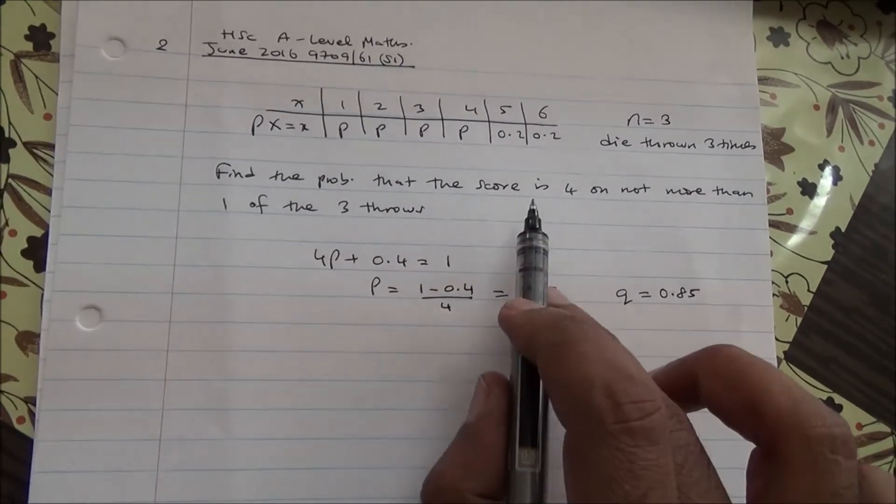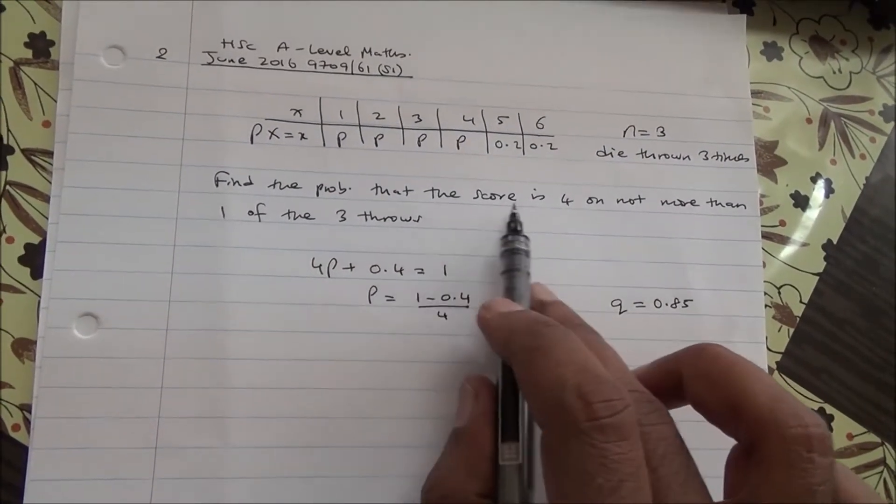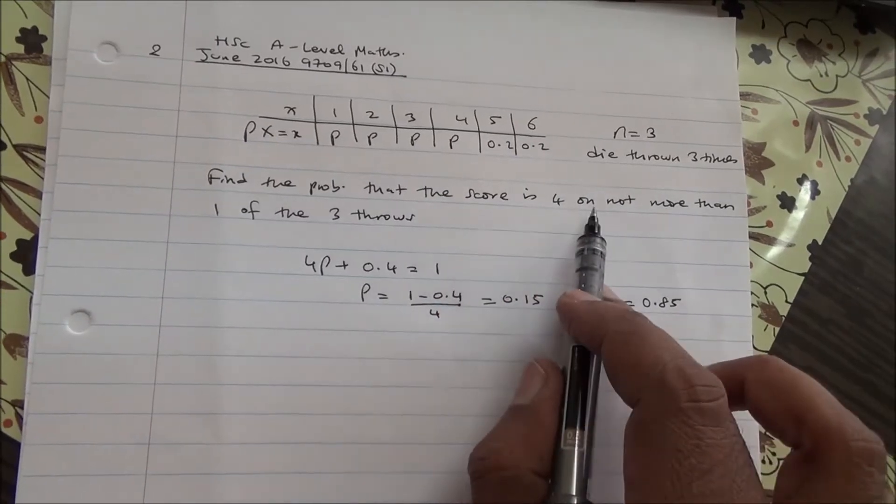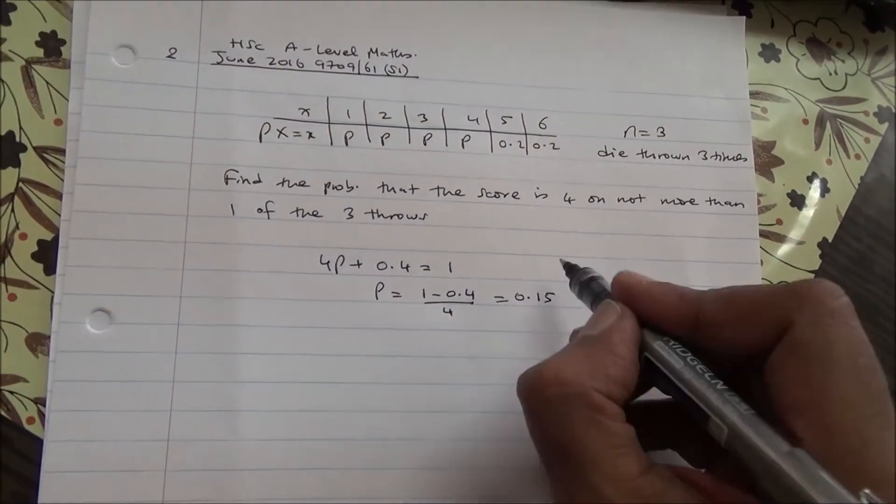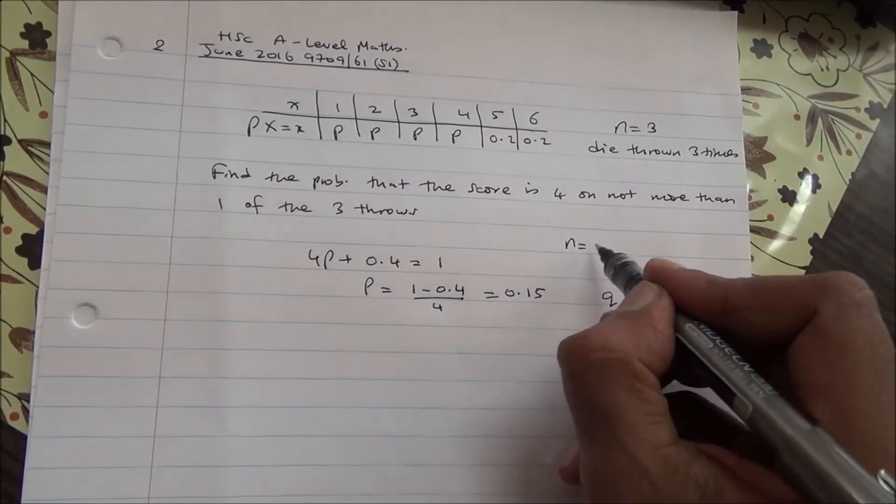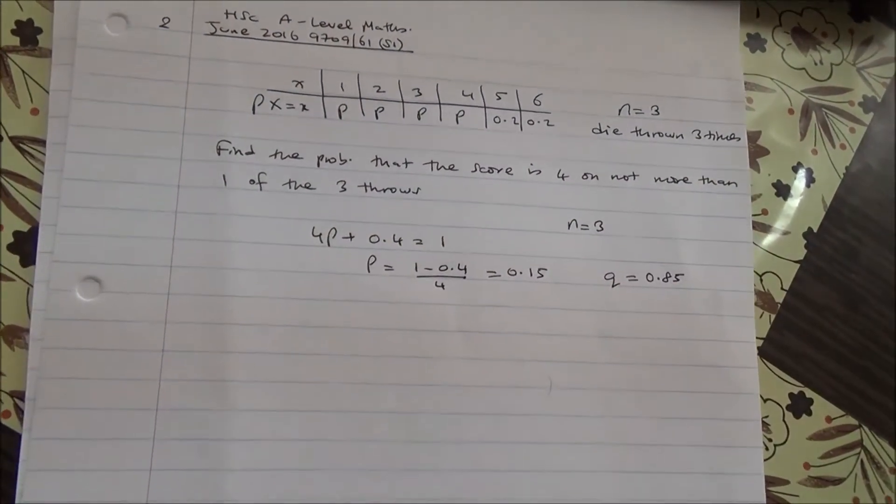The score is 4 on not more than one of the three throws. So the number of trials is 3.